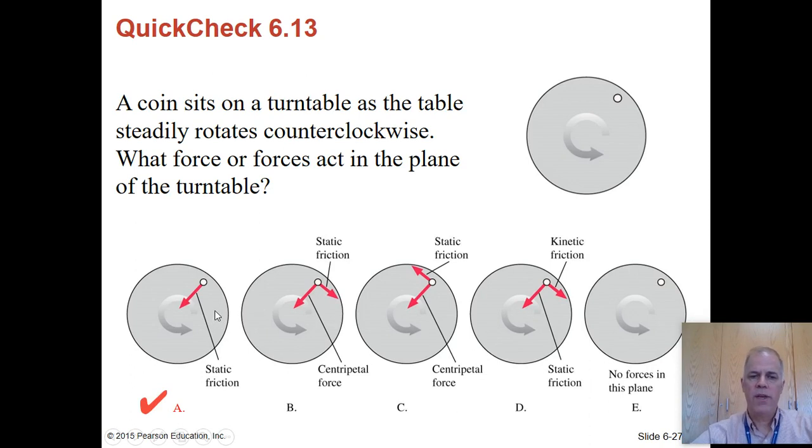Again, this is the same thing as before. The static friction has to be pointing toward the center of the turntable to produce the centripetal force that keeps the thing going in a circular path. And since that's really the only force acting on it, that's the direction of friction. Centripetal force is not a type of force. It's just a direction of force. And there is no kinetic friction because there's no relative motion between the coin and the turntable. But there has to be some force because if there was no force, the coin would just be going in a straight line.